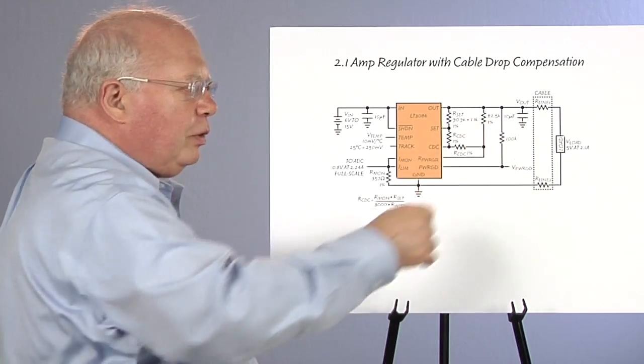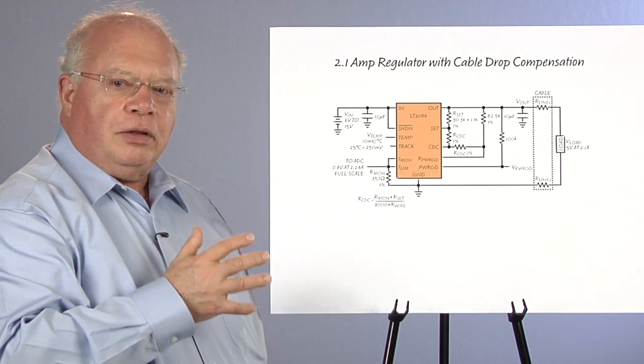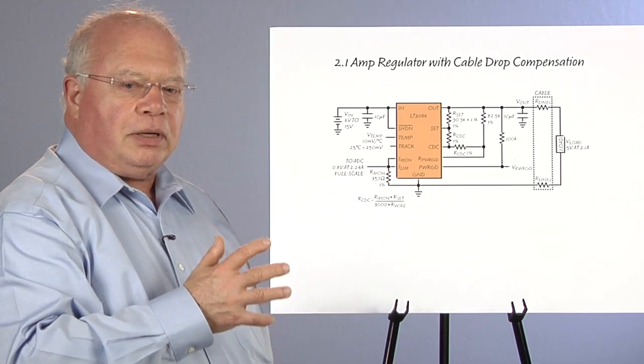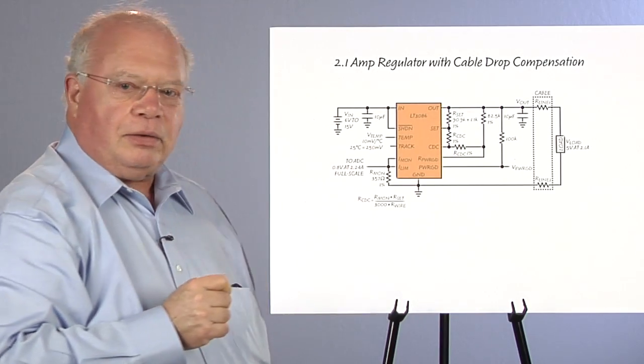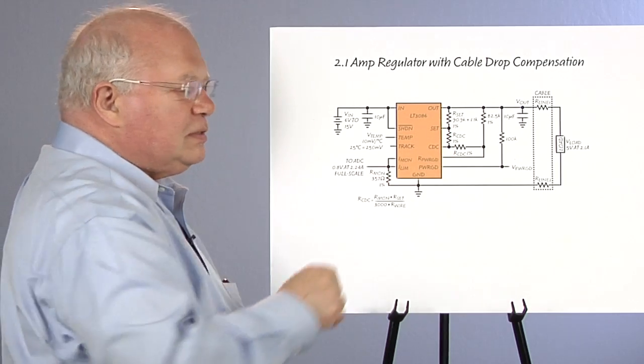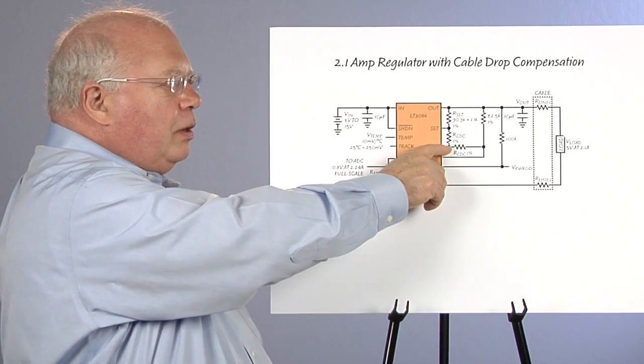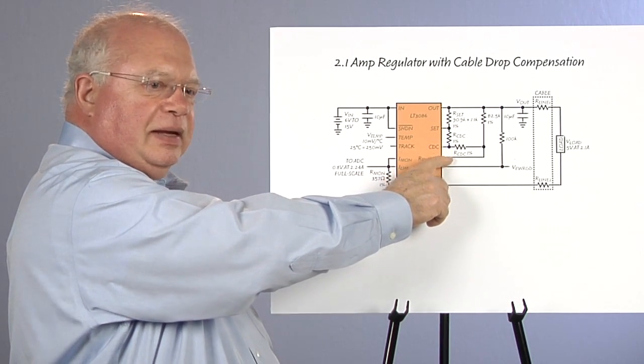If we have a load that's remote from the regulator and want to make sure that the load voltage stays constant as the load current goes up, we have the ability to make the output at the regulator rise to compensate for that drop. We have a pin we call CDC, cable drop compensation. And as the load current increases, the voltage at CDC goes negative.